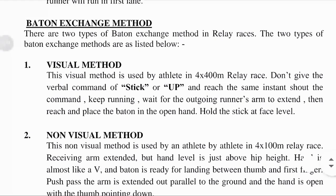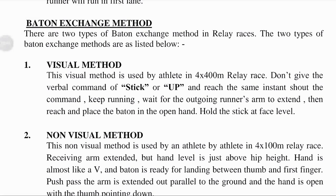Baton exchange method: the baton is a short stick or tube passed from one runner to another; 'exchange' means interchange. There are two types of baton exchange methods in relay races: the visual method and the non-visual method.